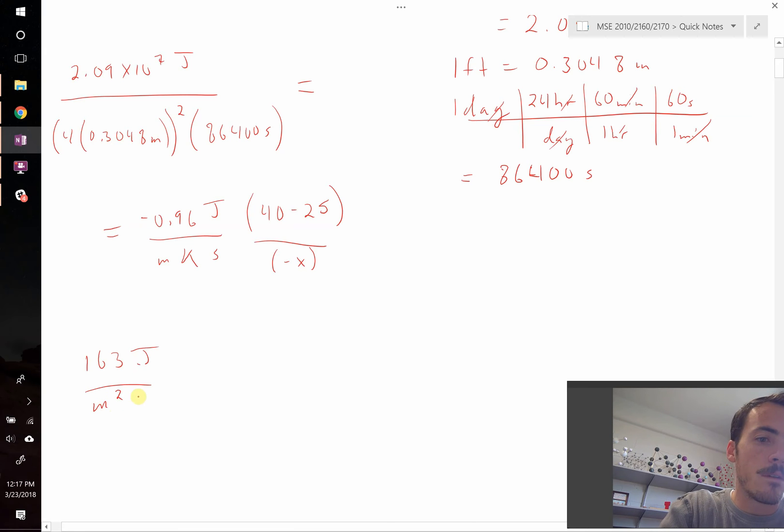And on the right hand side of the equation it simplifies down to negative 14.4 watts per meter, which we already decided was a joule per second per meter, and that is going to be divided by negative x. So we can solve for x just by bringing it over.